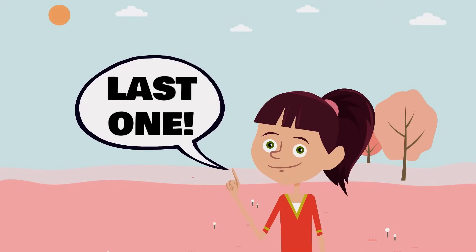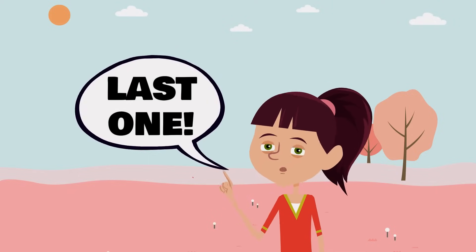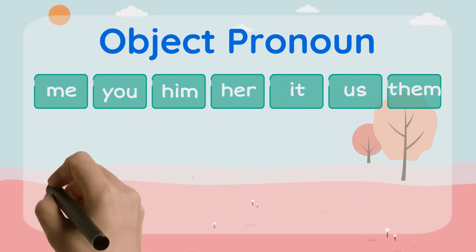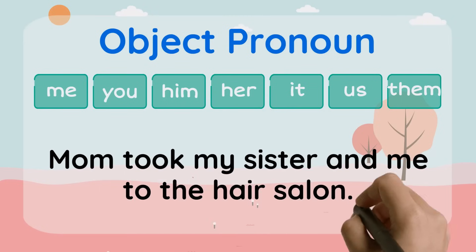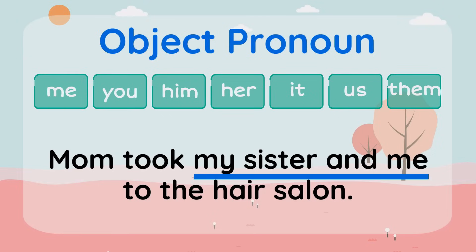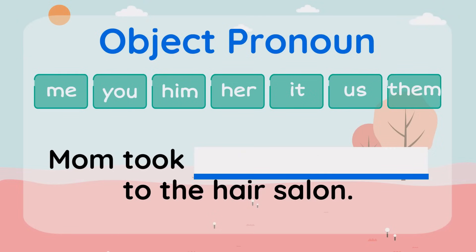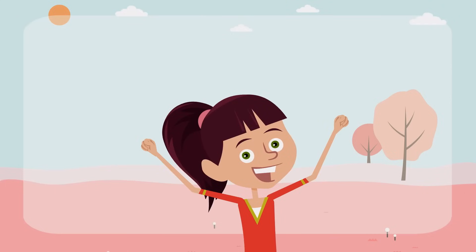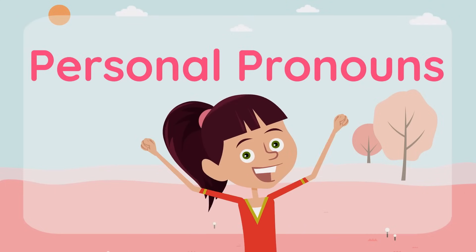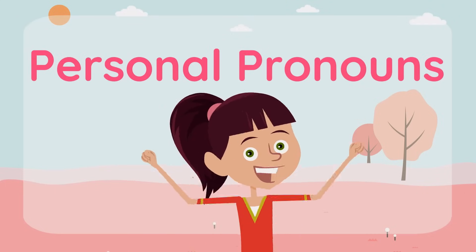Here's one more for practice. Mom took my sister and me to the hair salon. Can you replace my sister and me with a pronoun? Us is the correct answer — good job! Mom took us to the hair salon.